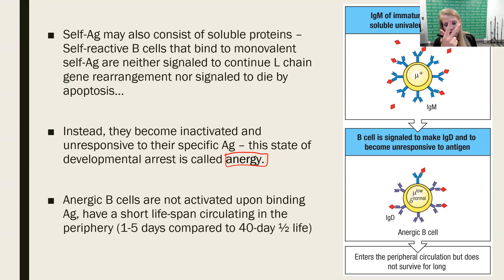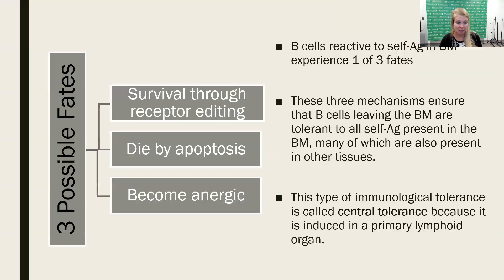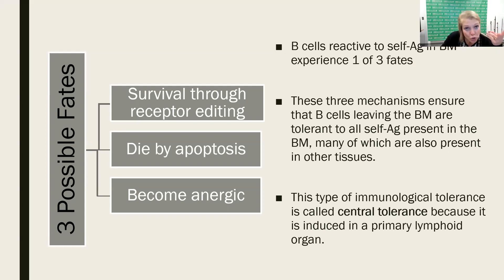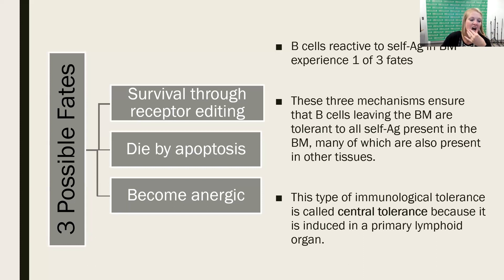So we have three outcomes for an immature B-cell when it gets tested for the ability to bind self-antigen. One: if it binds self-antigen, it can go back and fix its receptor through receptor editing, saving a lot of B-cells so they can go on to the next stages of development. Two: they could exhaust their options for receptor editing and end up dying by apoptosis. Or three: they could interact with soluble self-antigen and become rendered anergic. Those three possible fates can come out of bone marrow testing for self-antigen.